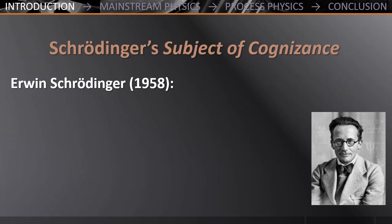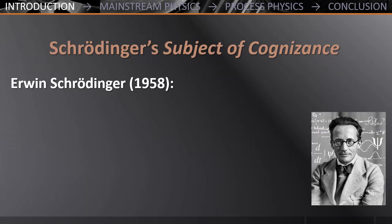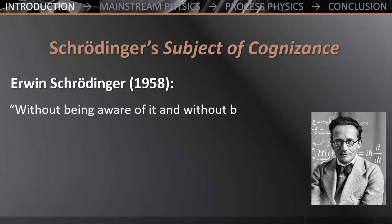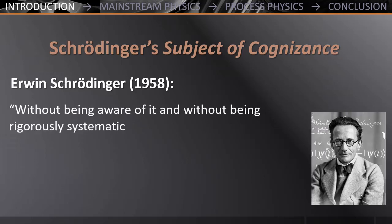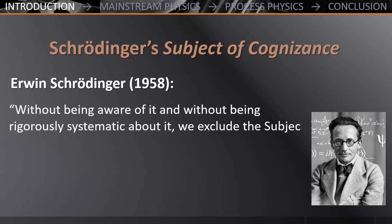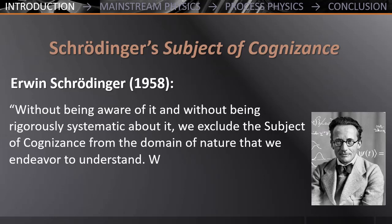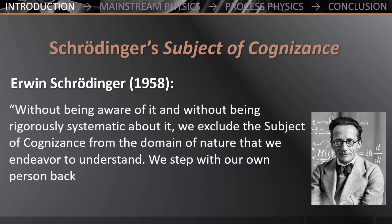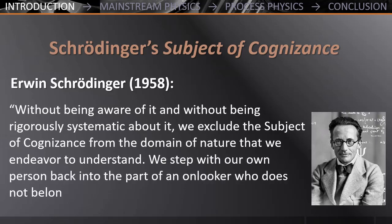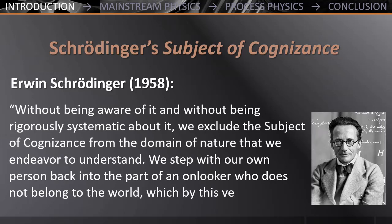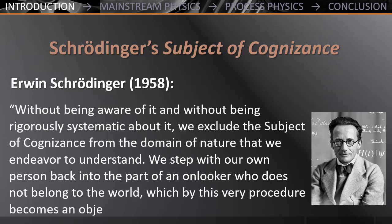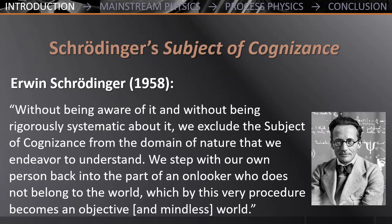So mainstream physics separates the subject side from the target side of observation, something which Erwin Schrödinger expressed like this: 'Without being aware of it, and without being rigorously systematic about it, we exclude the subject of cognizance from the domain of nature that we endeavor to understand. We step with our own person back into the part of an onlooker who does not belong to the world — a world which by this very procedure becomes an objective world.'